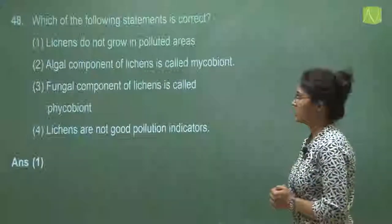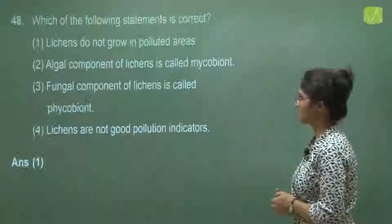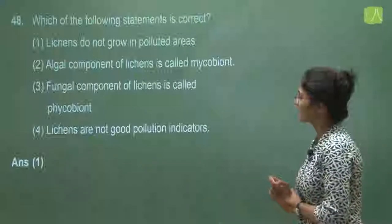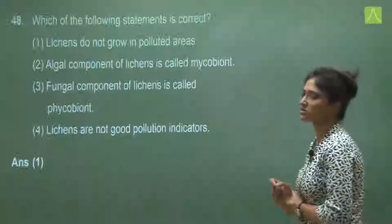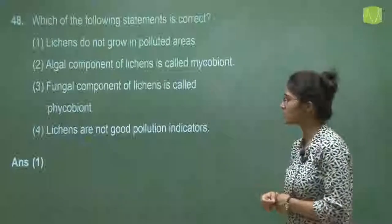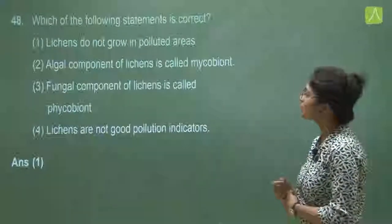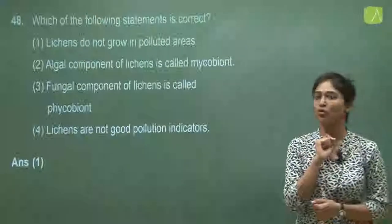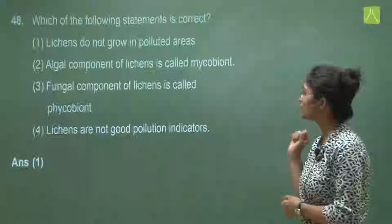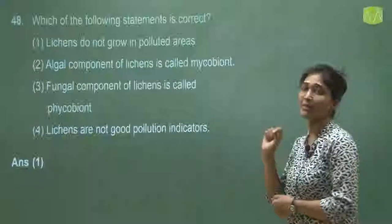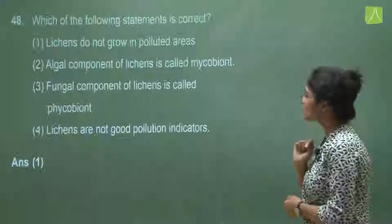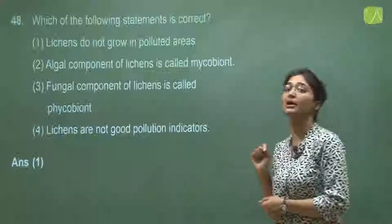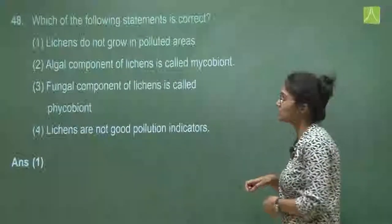Question 48 asks which statement is correct. Option one says lichens do not grow in polluted areas — this is quite correct. Option two says the algal component of lichens is called mycobiont — but it is actually called phycobiont, not mycobiont. Option three says the fungal component is called phycobiont — it should be mycobiont. Option four says lichens are not good pollution indicators — but they actually are good pollution indicators. So the answer is option one.